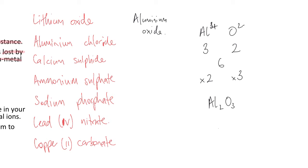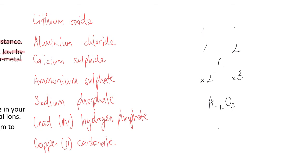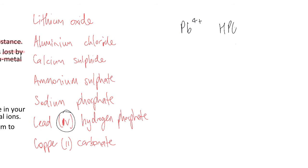Let's do lead(IV) hydrogen phosphate. Lead(IV) means the Roman numeral IV is the charge — so Pb4+. Hydrogen phosphate is HPO₄²⁻. The magnitude of 4 and the magnitude of 2 — the lowest common multiple of 4 and 2 is 4. Times that one by 1 and times that one by 2, so the formula is Pb(HPO₄)₂.